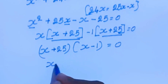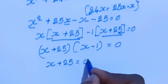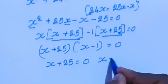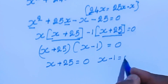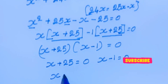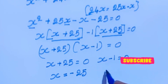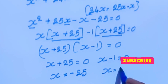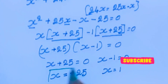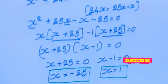We have two equations: one is x plus 25 equal to 0, and the other is x minus 1 equal to 0. From the first equation, x equal to minus 25. From the second, x equal to 1. These are the possible answers in the first method.